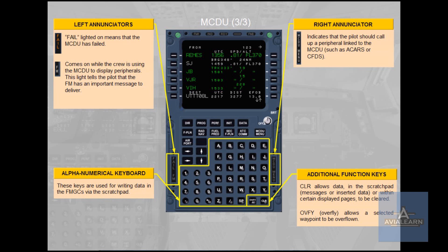The Alpha-Numerical Keyboard keys are used for writing data in the flight management and guidance computers via the scratchpad. Additional Function Keys: CLR allows data in the scratchpad, messages or inserted data, or within certain displayed pages, to be cleared. OVERFLY allows a selected waypoint to be overflown.